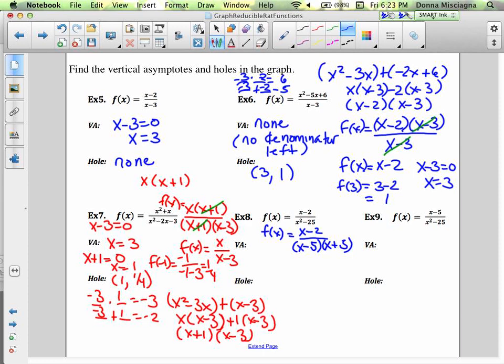Notice, nothing matches. So we have no holes because I didn't cancel anything out. We do have two vertical asymptotes, however. We have one at 5 and one at negative 5. So we have two vertical asymptotes, x equals 5 and x equals negative 5, but no holes.